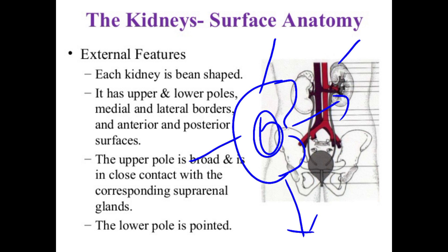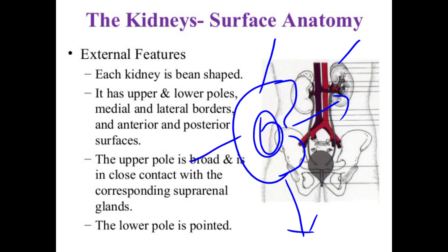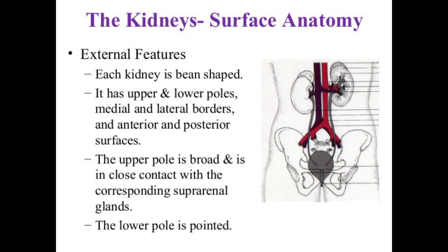The upper pole is broad and is in close contact with the corresponding suprarenal gland, which is an endocrine gland. The lower pole is pointed. These are the gross features of the upper and lower poles of the kidney.